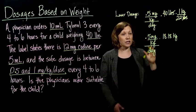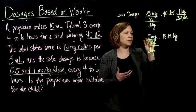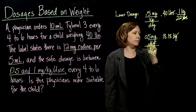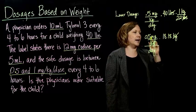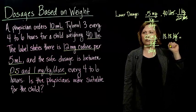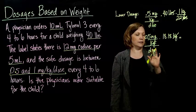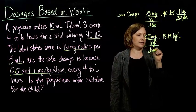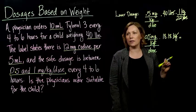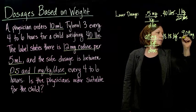So with 0.5 milligrams per kilogram per dose, our kilograms cancel out, and we do 0.5 times 18.18. Note this should be per dose, not per day. We end up with 9.09 milligrams per dose.